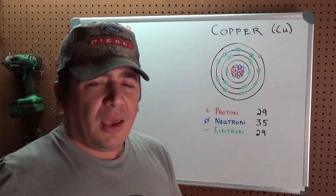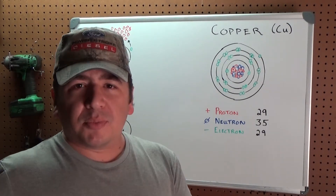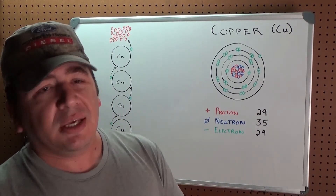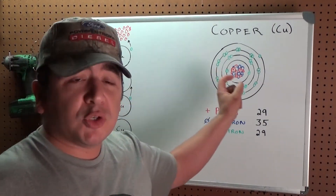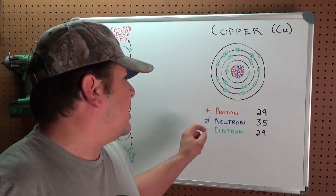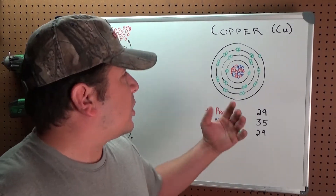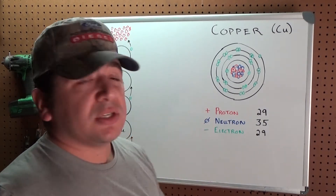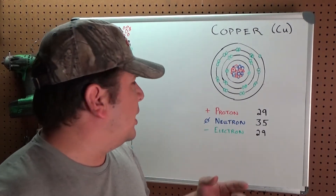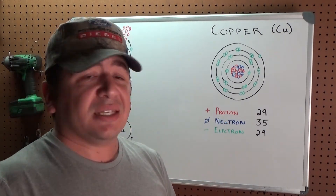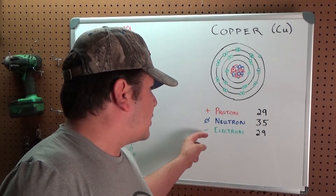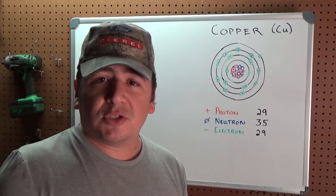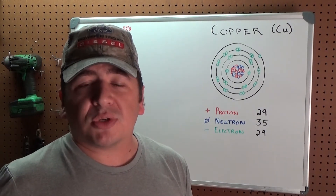Atoms, as you may or may not remember from school, are made up of three things: protons, neutrons, and electrons. The nucleus of the atom, where the majority of the mass is, is made up of protons and neutrons. For copper we have an equal number of protons and electrons — 29 protons and 29 electrons — which is the case for most elements because that's its lowest energy state.